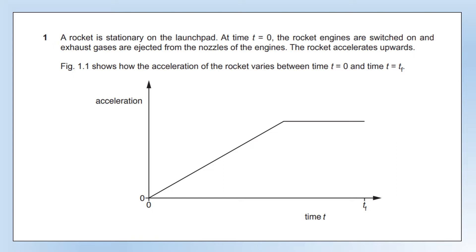We've got a rocket stationary on the launch pad. At time equals zero, the rocket engines are switched on and exhaust gases are ejected from the nozzles of the engines. The rocket accelerates upwards, and the diagram shows how the acceleration of the rocket varies between time equals zero and time tf. Things I'm noticing straight away from this graph: we've got a period where the acceleration is increasing, and then we've got a period of constant acceleration. I'm going to use these for the next question.